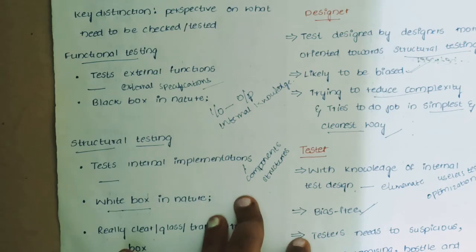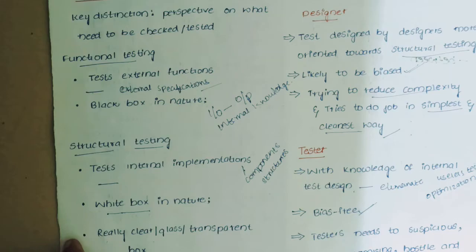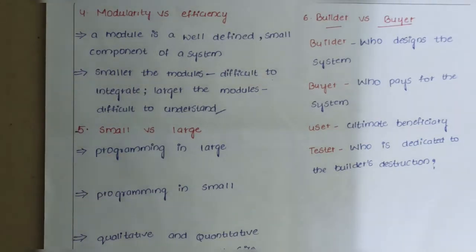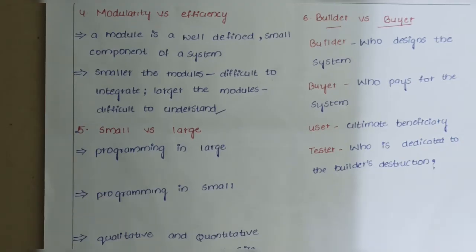Modularity versus efficiency: modularity is a standard set of paths. A module is a well-defined small component of a system. The smaller the module, the more difficult it is to integrate — that is, to combine two or more modules. The larger the module, the more difficult it is to understand.